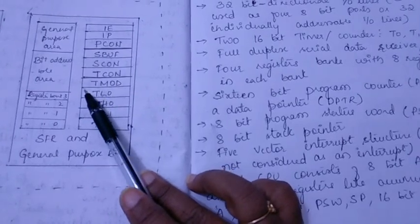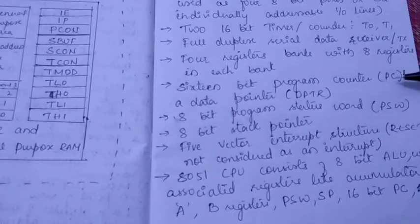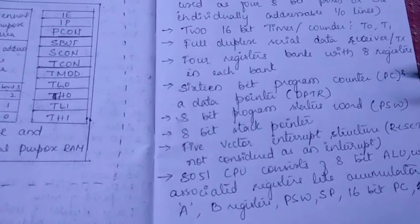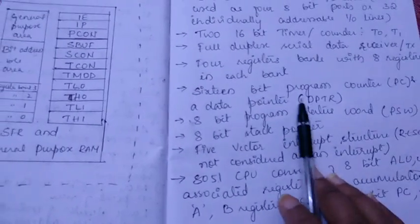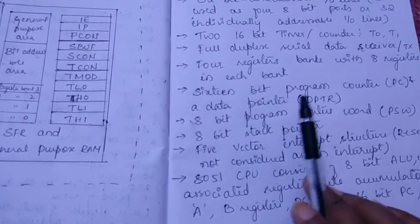We have four register banks - register 0, register 1, register 2, and register 3 - and in each bank we have eight registers. So it is a bank of registers. Such banks we have four. Next, 16-bit program counter and there is a 16-bit data pointer which we call DPTR.